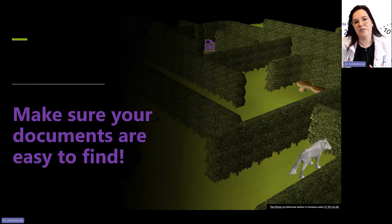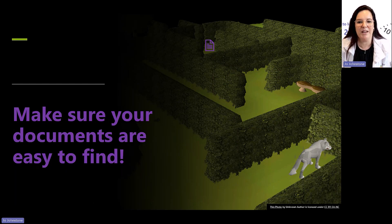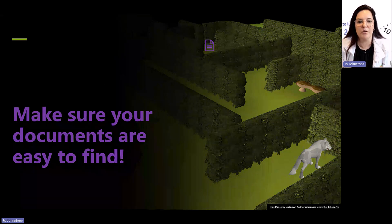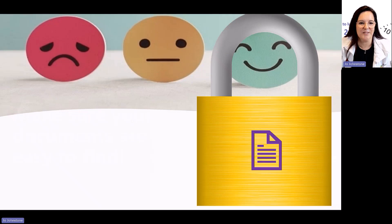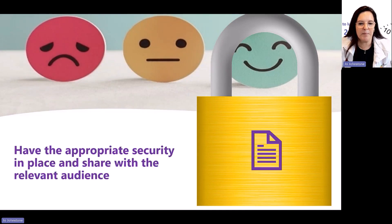Think about your filing system today - is it up to date? Have you got three folders with similar content in them? How easy is it to find your documents? They've got search facilities, but have you put the structure in a way that makes sense? If you haven't looked at it for ages, my recommendation is to go back and have a tidy up, thinking about that structure and making sure your documents are easy to find.